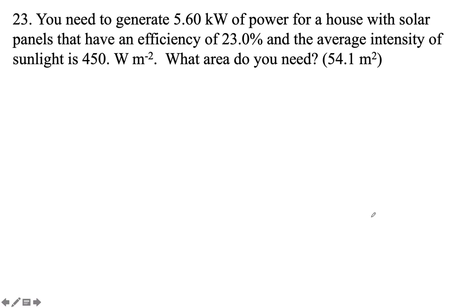You need to generate 5.6 kilowatts of power for a house with solar panels that have an efficiency of 23.0%. The average intensity of the sunlight is 450 watts per square meter. What area do you need?